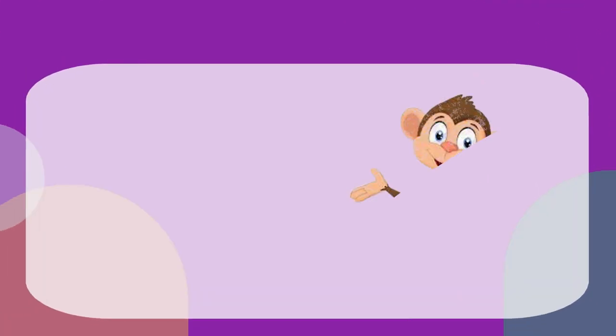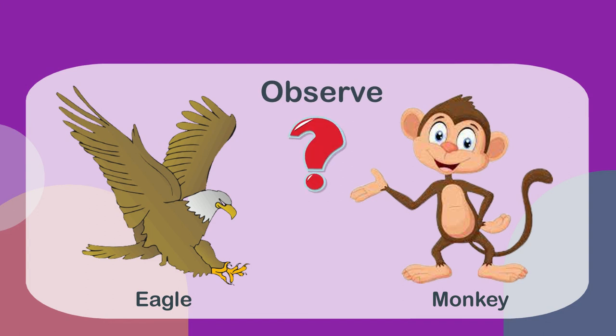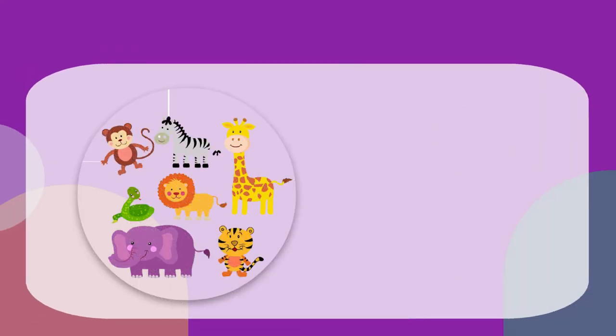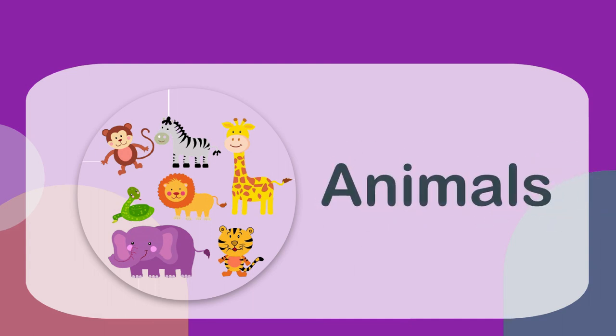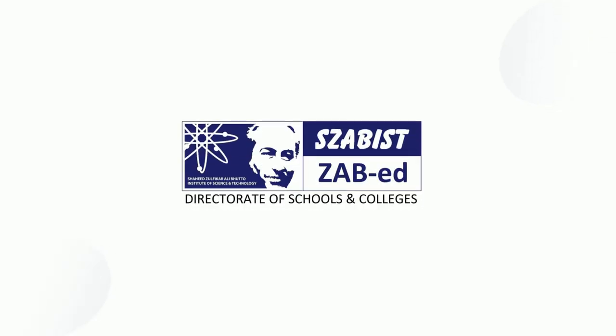Have a look at this picture of a monkey and an eagle, and observe what body parts they have and how different they are from each other. We hope now you have learned some more about animals. If some concepts are not clear, then replay the video again. Still if you have some questions, then ask your teacher. Thank you.